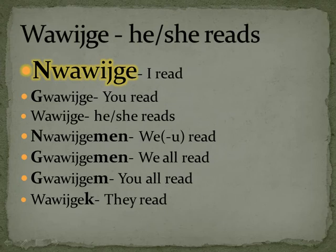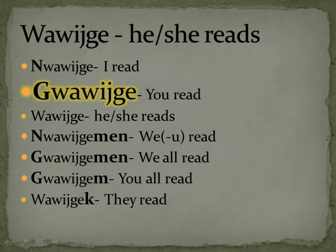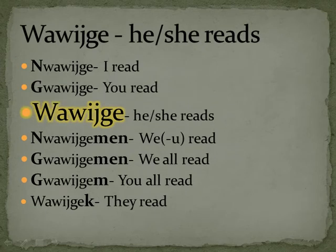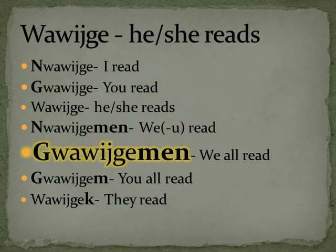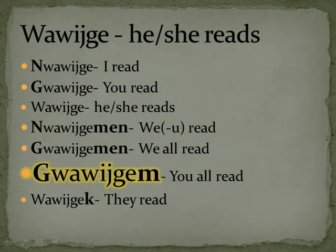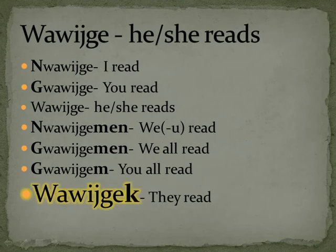Wawijge is the verb to read. Nawawijge — I read. Gawawijge — you read. Wawijge — he or she reads, or wawijge-wek. You wouldn't put a W on the front of this one since it already has a W. Gawawijgemen — we but not you read. Gawawijgemen — we all read. Gawawijgem — you all read. Wawijgek — they read.